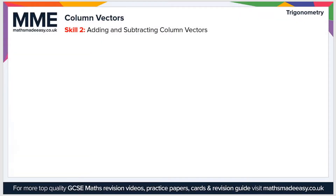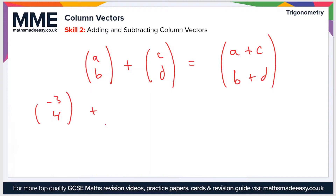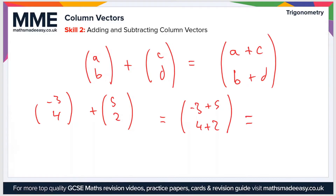So if we want to add column vectors, say we have (a, b) plus (c, d), then quite simply we just add the x and the y components separately. So the column vector then becomes (a+c, b+d). For example, if we have the vectors (-3, 4) and (5, 2), then that would become -3 plus 5 and 4 plus 2, which is equal to (2, 6).